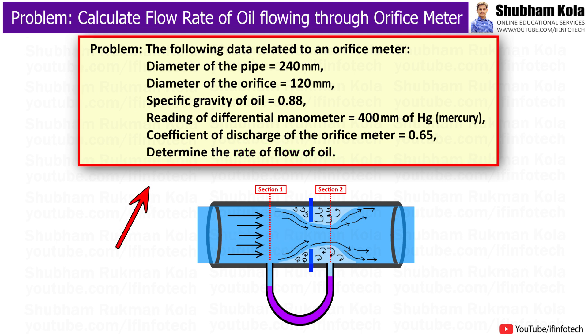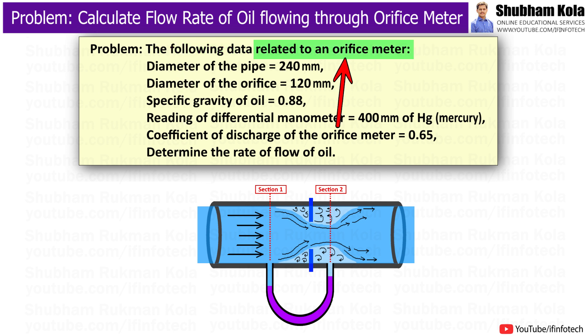The problem statement is given as follows: the following data related to an orifice meter, where diameter of the pipe is equal to 240 mm, diameter of the orifice is equal to 120 mm.